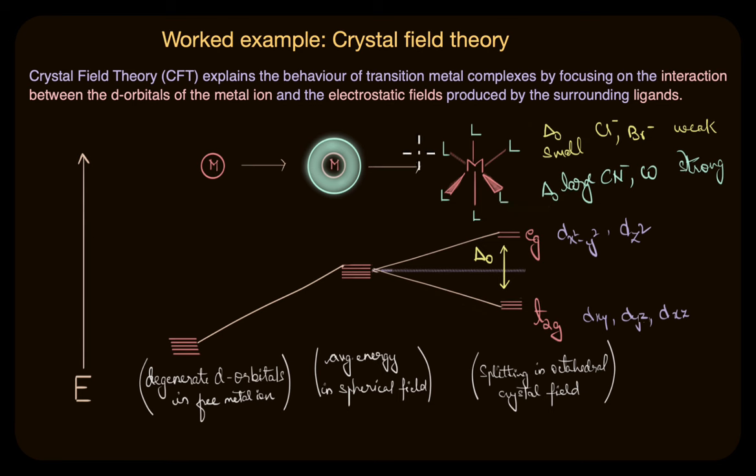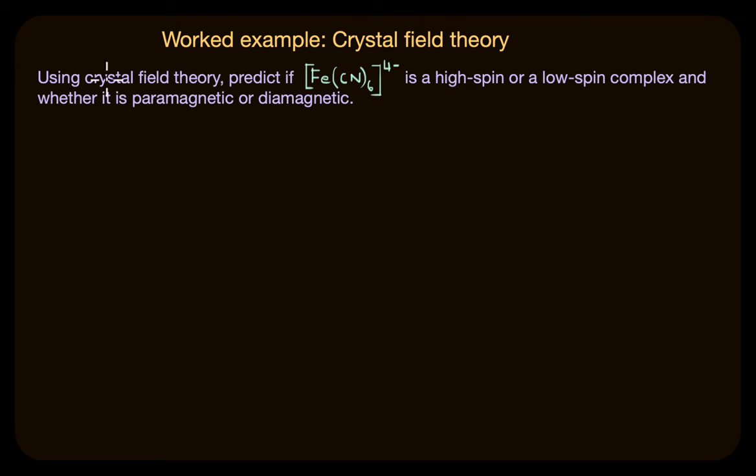Moving forward, how do we solve this question? Well, the first thing that we need to do is to figure out the d electronic configuration. For that we have to calculate the oxidation state of iron. Let the oxidation state of iron be x and it is coordinated to 6 cyanide ions which have a charge of -1 and the overall charge of the complex is -4. So, we get the oxidation state of iron here as +2.